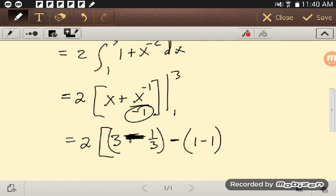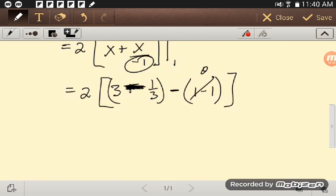Okay, so that is just 0. And so I have 9 thirds minus 1 third, which is 8 thirds. So 2 times 8 thirds or 16 over 3.